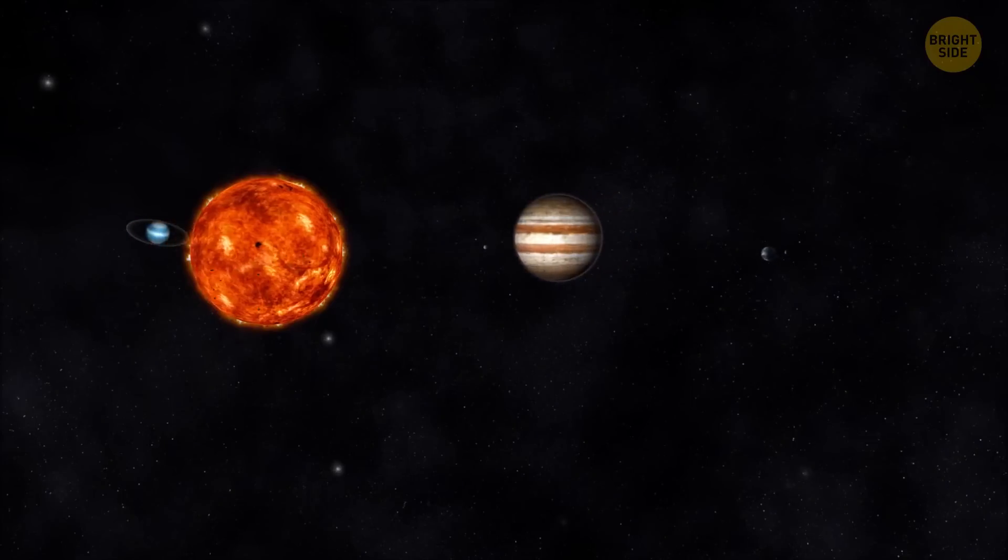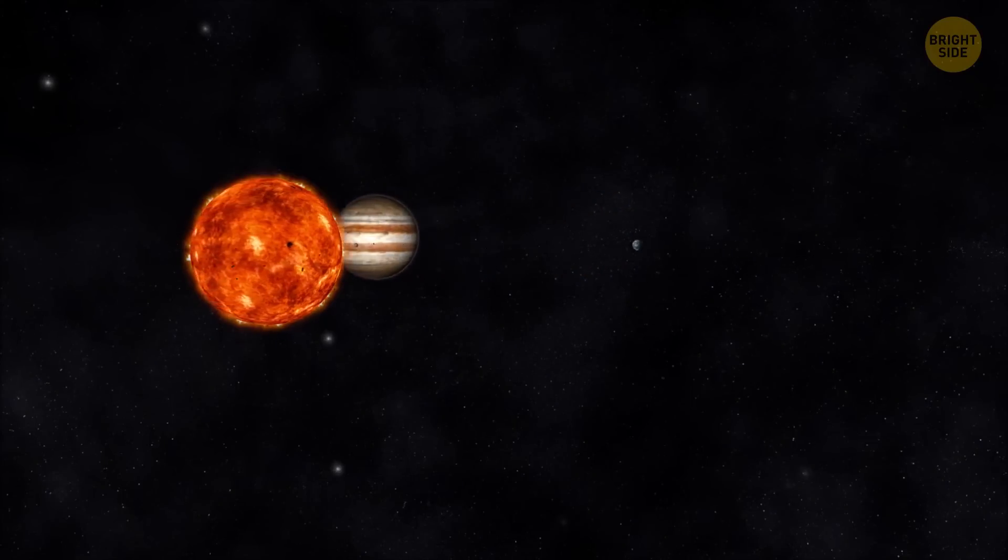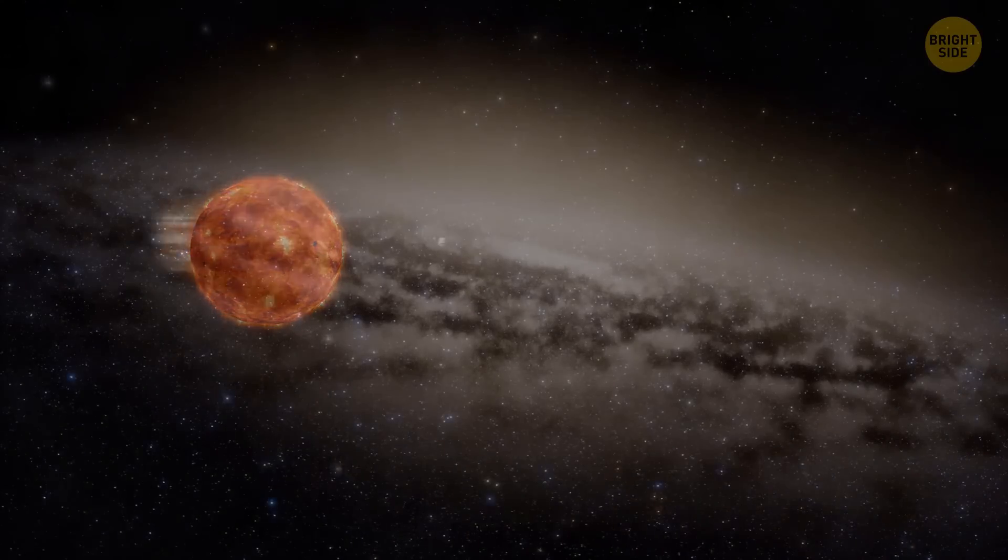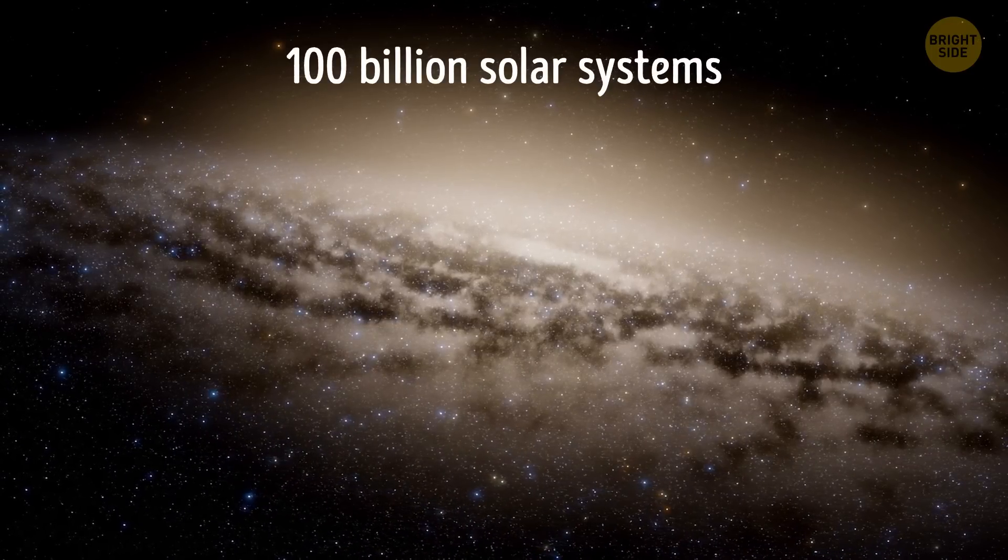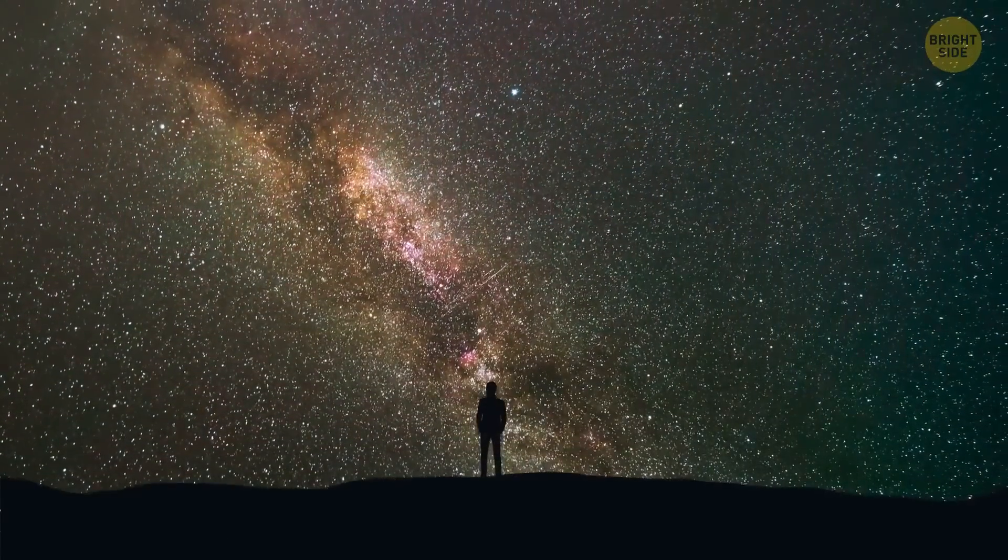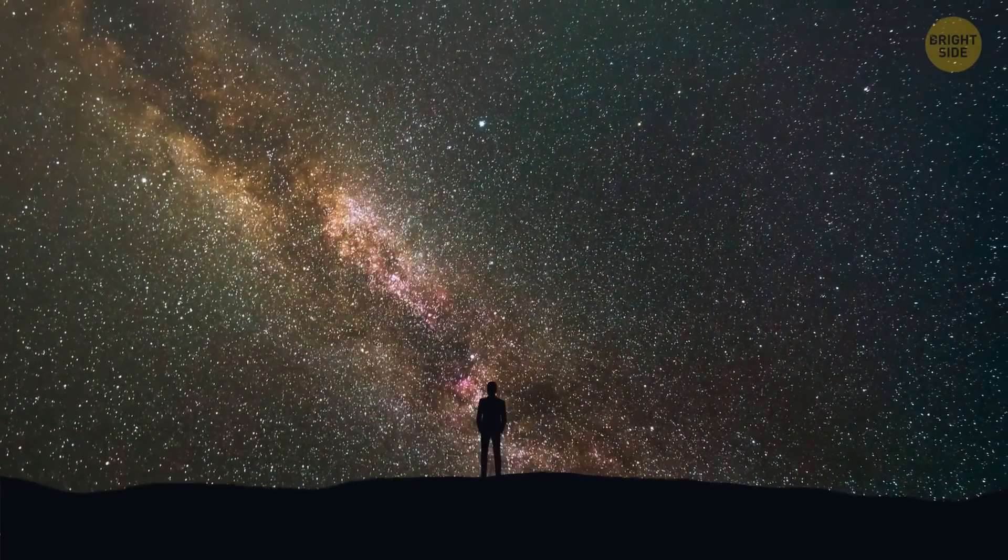Our solar system isn't the only one in the Milky Way galaxy. Far from it. The galaxy we live in houses about 100 billion solar systems. And if that's just our galaxy alone, can you imagine how many there are in the whole universe?